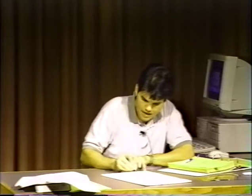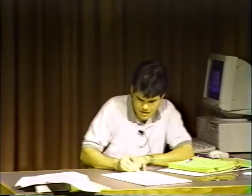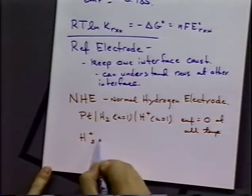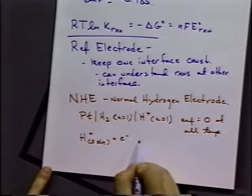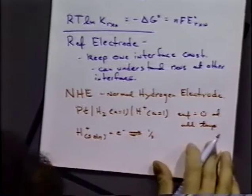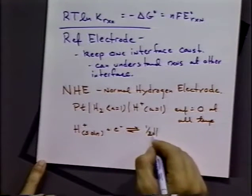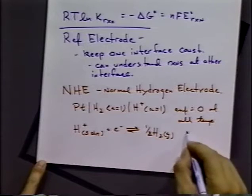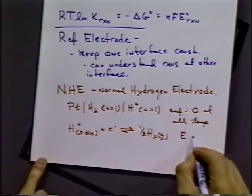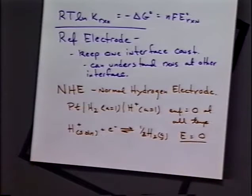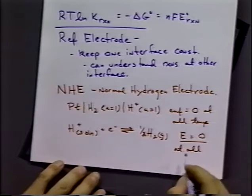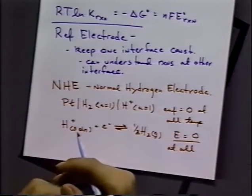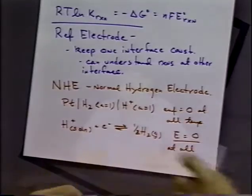This also implies that the reaction of hydrogen ions in solution plus an electron going to one-half hydrogen gas — that half reaction is also equal to zero. So those two systems are zero at all temperatures. These are zero by convention and definition, not by physical reality. We have to have some standard, and that's what they've chosen to use.